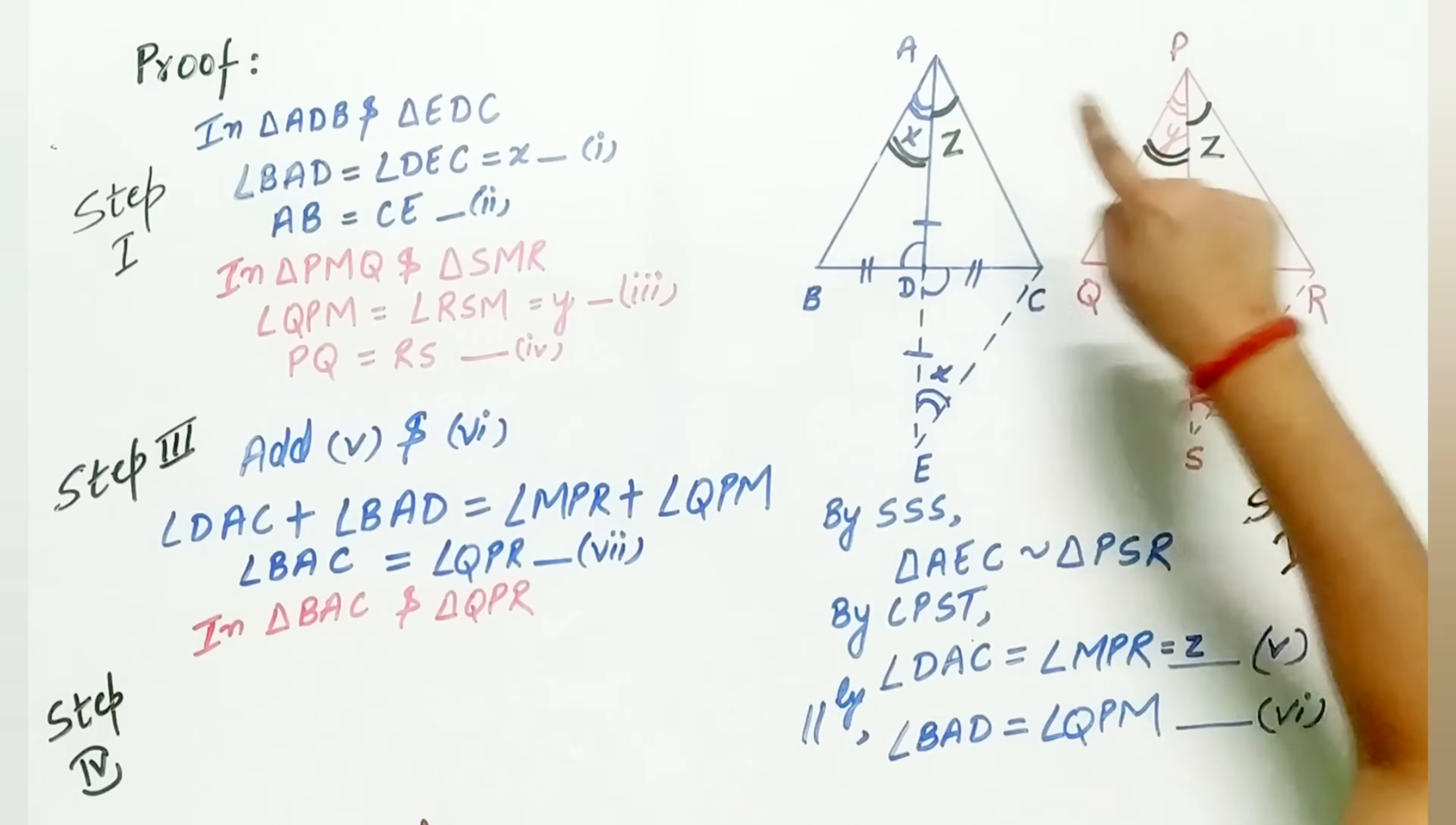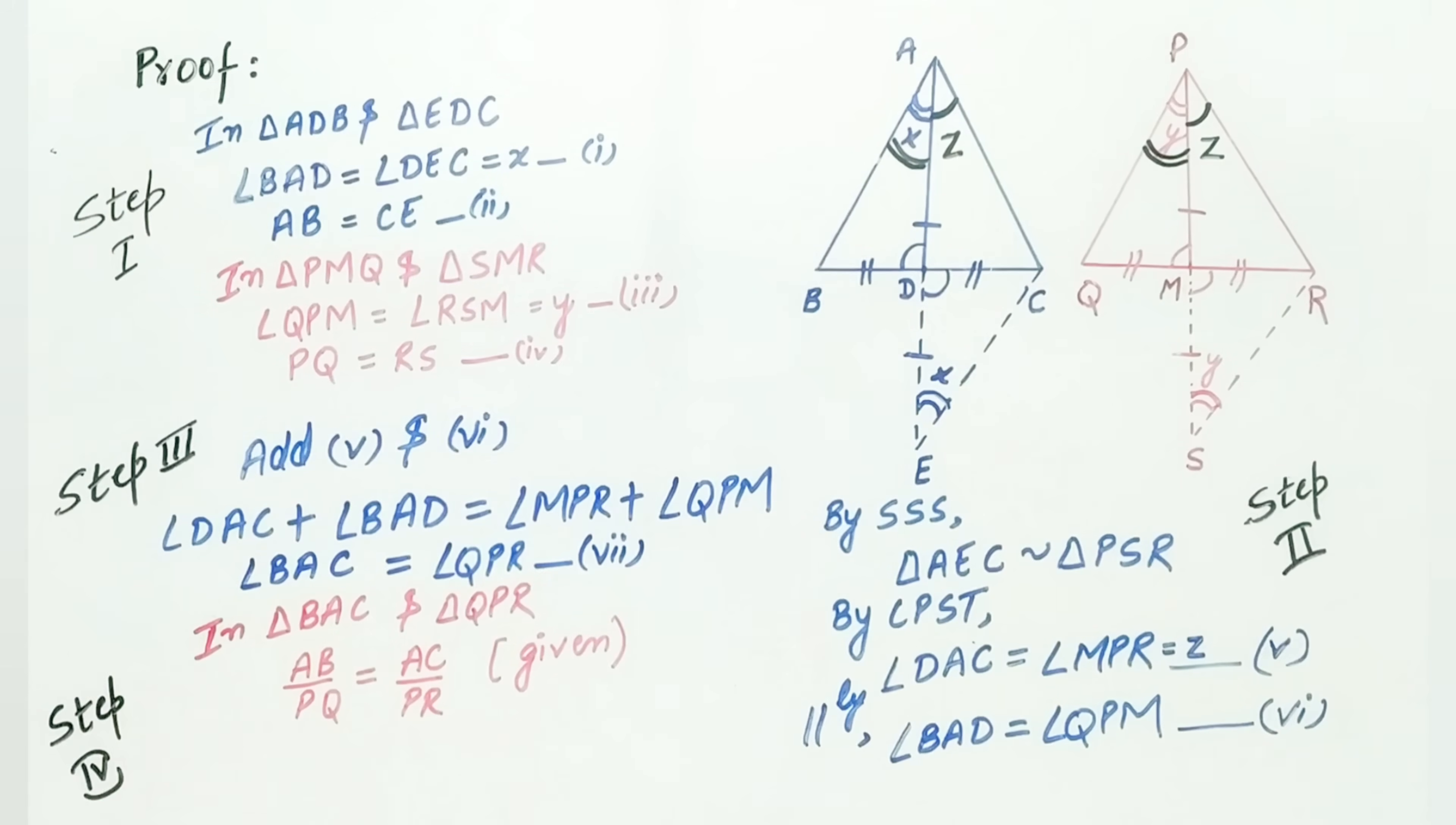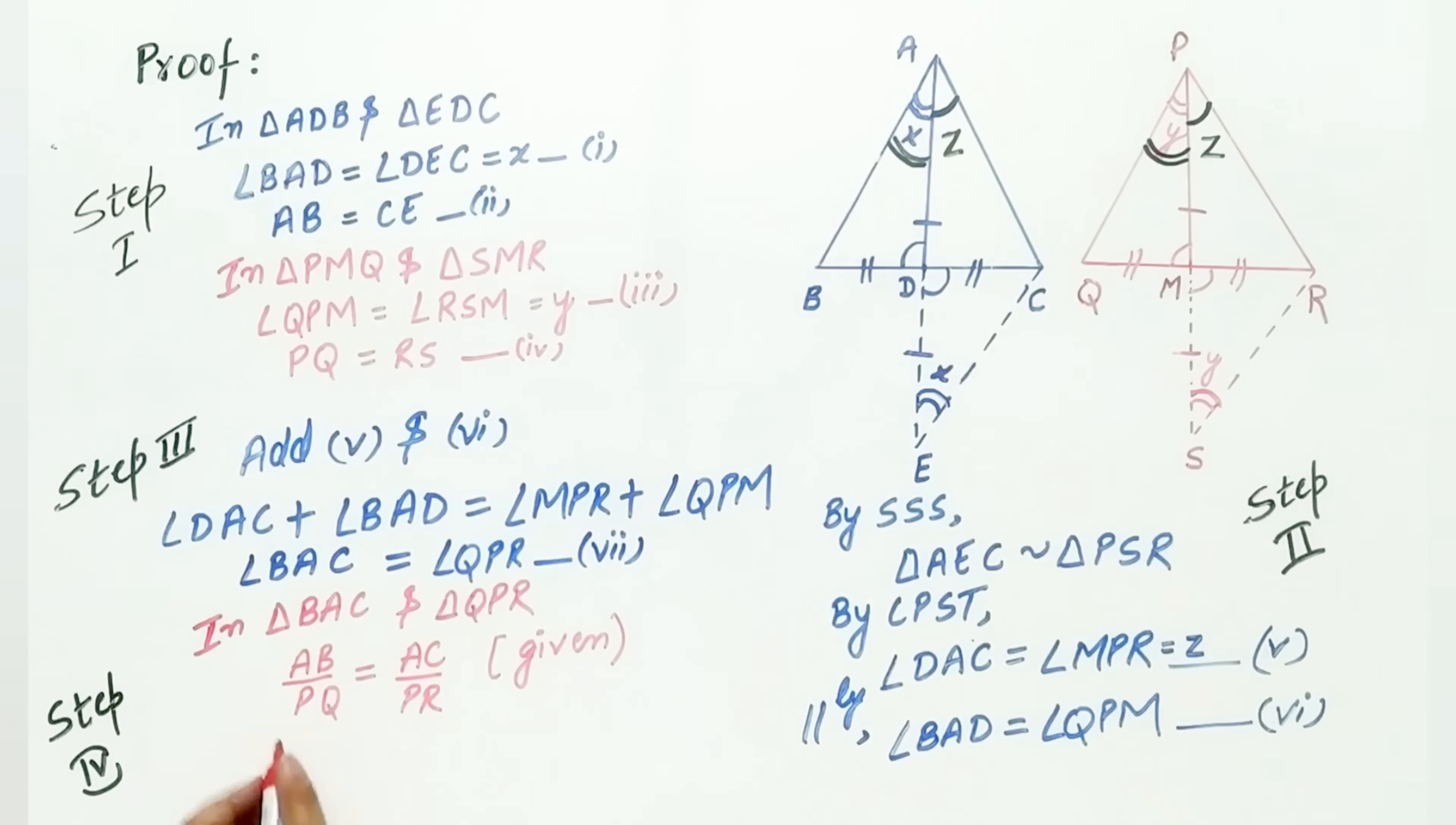AB is proportional to PQ. AC is proportional to PR. It's given to us. And angle BAC is equal to angle QPR. We have already proved it.